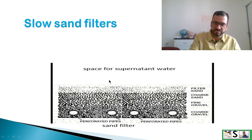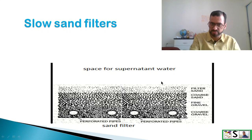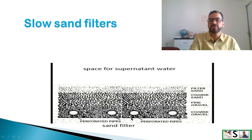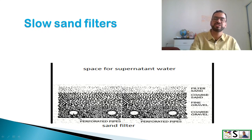From the picture you can understand: at the top is the space for supernatant water, then fine sand, then graded gravel — first smaller, then medium, then larger size — and at the bottom there are perforated pipes or a drainage system which takes out the filtered water.